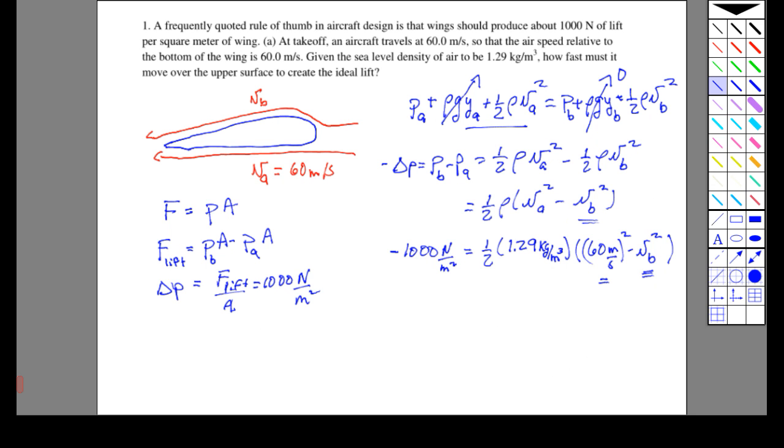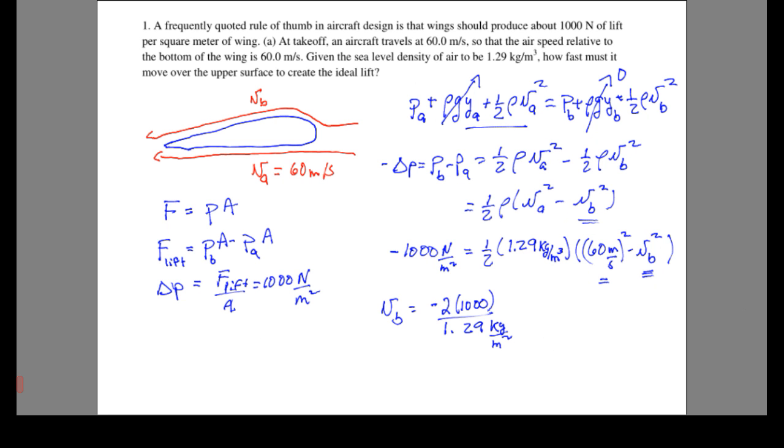Let's solve for V_B. V_B is going to be negative 2 times a thousand divided by 1.29 kilograms per meter cubed. I forgot the units over here, so let's include those—that's newtons per meter squared, this should be cubed.